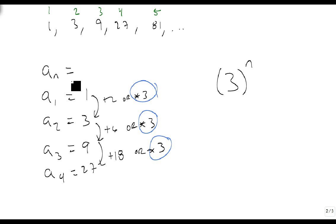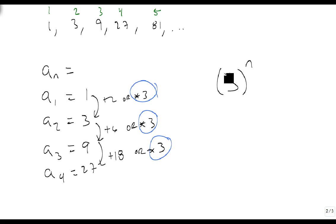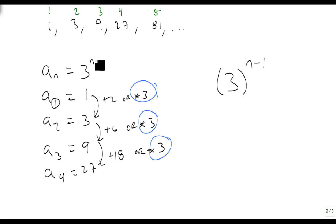We need to go back and check: a sub 1 is 1, so what power do I raise 3 to in order to get 1? The answer is 0, but my n is 1, so I need to subtract 1 from this. So my general term is 3 to the n minus 1.